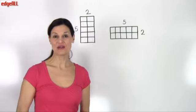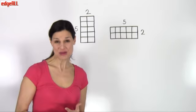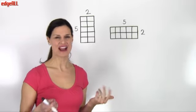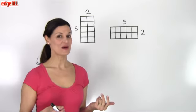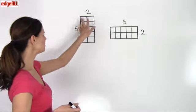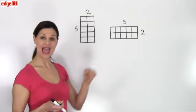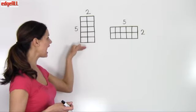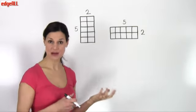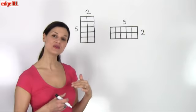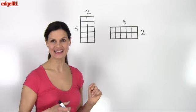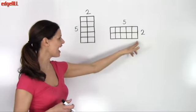Let's look at another example of the commutative property of multiplication, looking at rectangles. So if I have a rectangle that is two blocks wide and five blocks high, it is going to contain the same number of blocks as a rectangle that is five blocks wide and two blocks high.